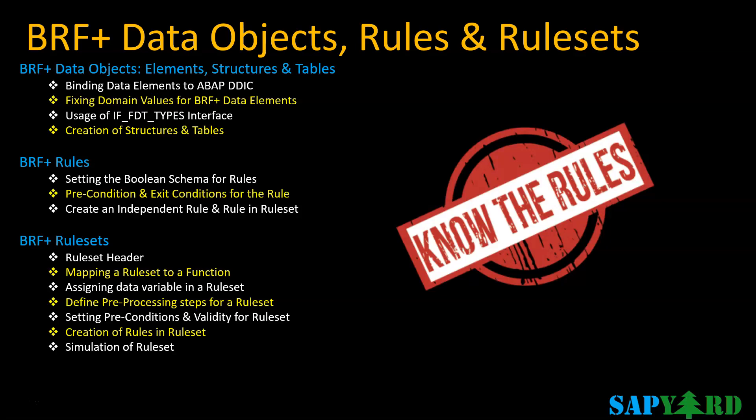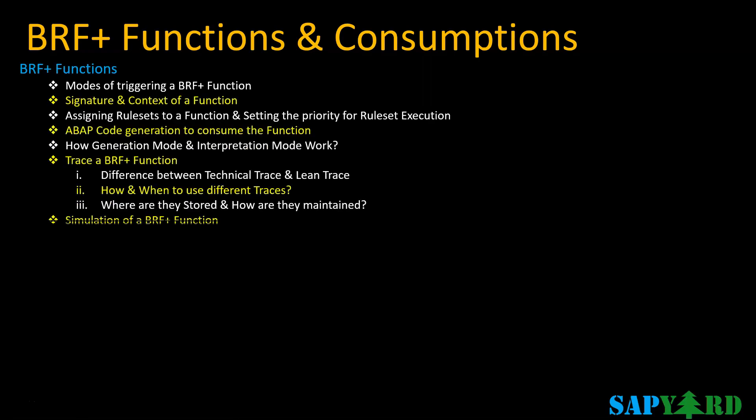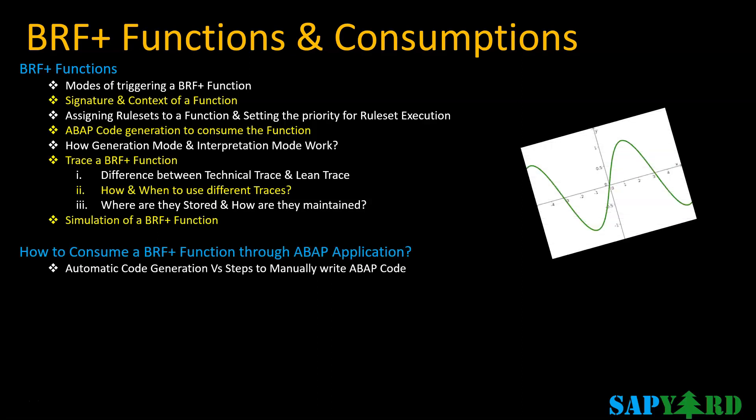It will be a complete hands-on session where the trainer will teach the steps and the participants get the opportunity to do the practicals during the live classes. Functions in BRF Plus are considered as the connecting link between the code and the rules. They define inputs and outputs, and thus act as the contract between the caller and the business logic implemented with the rules. In short, functions define the purpose of what is to be done in the business rule. We will cover the modes of triggering BRF Plus functions, signature and context of functions, along with how to assign rule sets to functions. We will also learn how to generate ABAP code to consume the function and dive deeper to explore tracing techniques of BRF Plus functions.